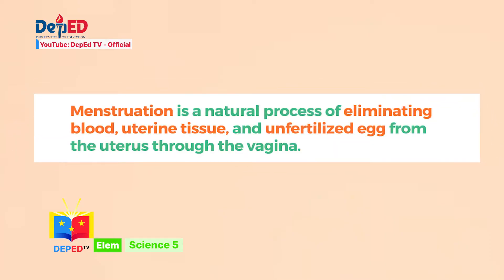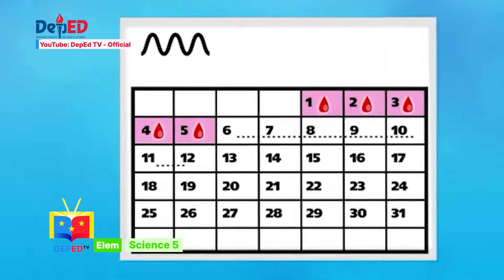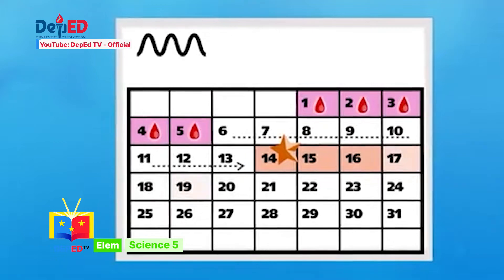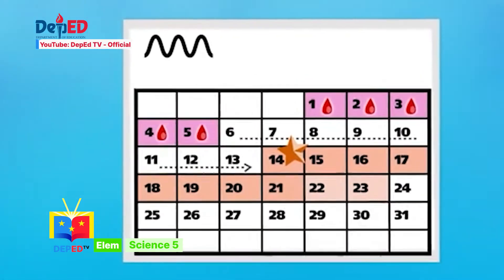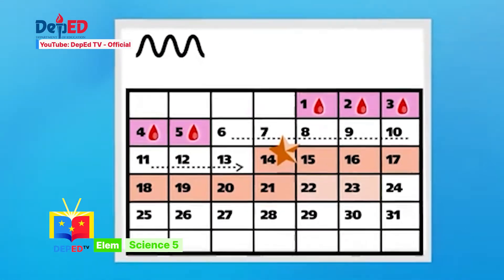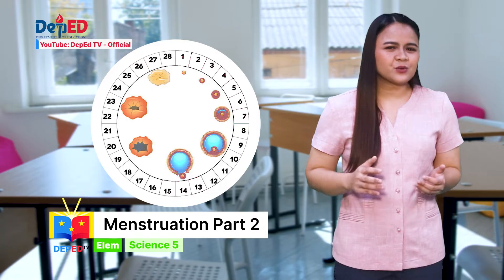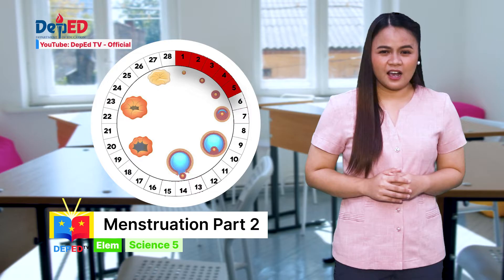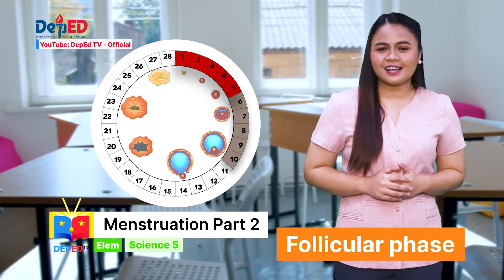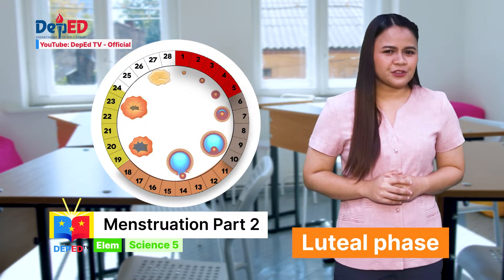Today we have learned that menstruation is the natural process of eliminating blood, uterine tissue, and unfertilized egg from the uterus through the vagina. Menstruation can last between three to seven days. The average menstrual cycle usually lasts 28 to 30 days. The menstrual cycle has four phases: menstrual phase, follicular phase, ovulation, and luteal phase.